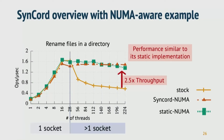Here's the result. The workload renames files in a directory, so it's contending on a rename lock. The X axis is the number of threads and Y axis is throughput. The experiment is measured on a 224-core machine with 8 sockets, so each socket has 28 threads. When the rename lock is updated with Synchrod to be NUMA-aware, the performance increased more than 2.5x. In addition, Synchrod's dynamic approach shows similar performance to the same lock algorithm implemented statically.